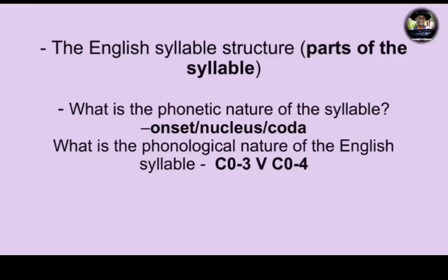We'll then move to understanding the English syllable structure — the basic parts of the syllable. We'll focus on its phonetic nature, covering the onset, the nucleus, and the coda. We'll also look at the phonological nature of the English syllable, specifically what we refer to as the phonotactics: at the beginning we have a maximum of three consonants, and at the end a maximum of four consonants.